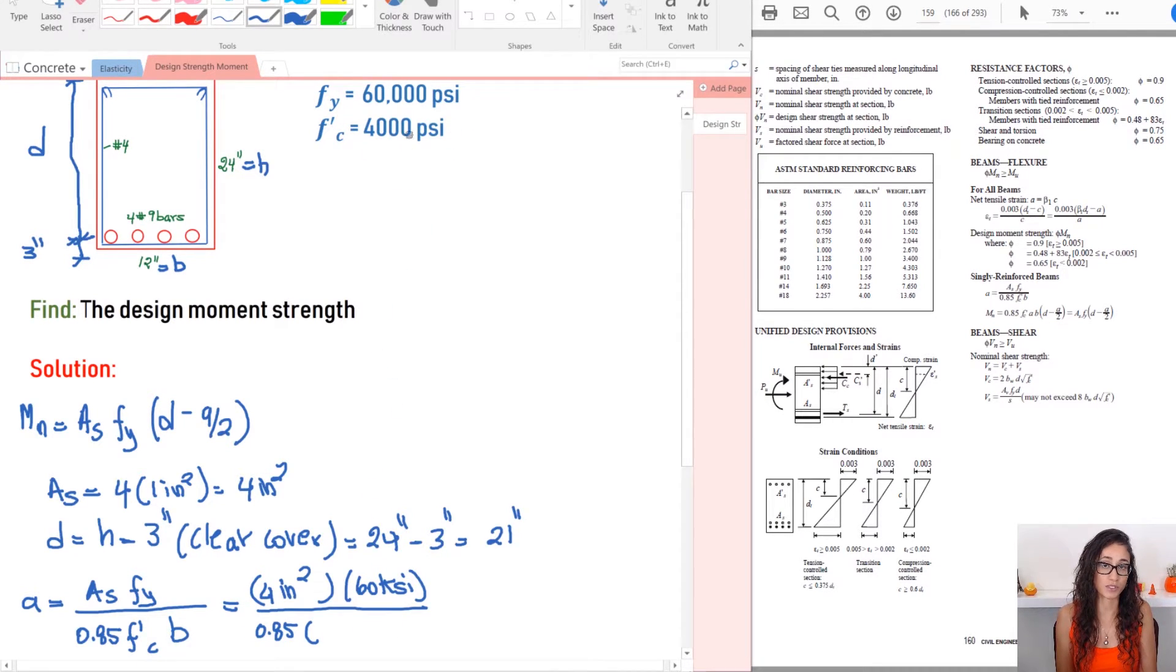So 60 KSI divided by 0.85 multiplied by F prime C. So I'm going to use the same thing. It has to be the same guys. So that way, when you cancel your units, you get the right answer. So make sure if you use kips here, make sure you use kips here as well. So I'm going to use four KSI and then times B, which is the depth and that's, which is sorry, the width and that's equal to 12 inch.